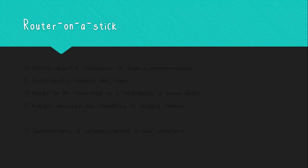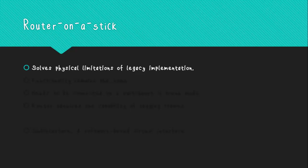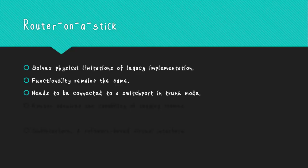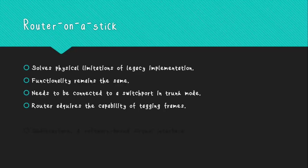Router on a stick InterVLAN routing solves the physical limitations of legacy implementations, because you only have a limited number of physical interfaces on a router. The functionality remains the same — the process of sending and receiving frames is exactly the same as in the previous method. One important requirement is that the router needs to be connected to a switch port in trunk mode, which gives it the capability of tagging frames from different VLANs. It is important to understand the concept of a subinterface, which is a software-based virtual interface created within a single physical interface.